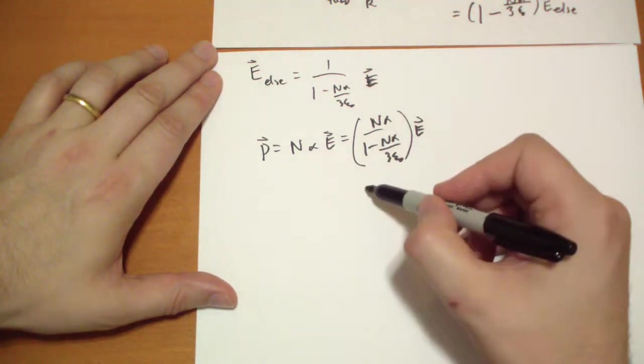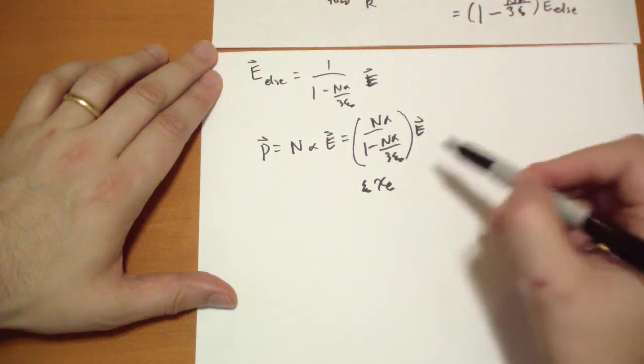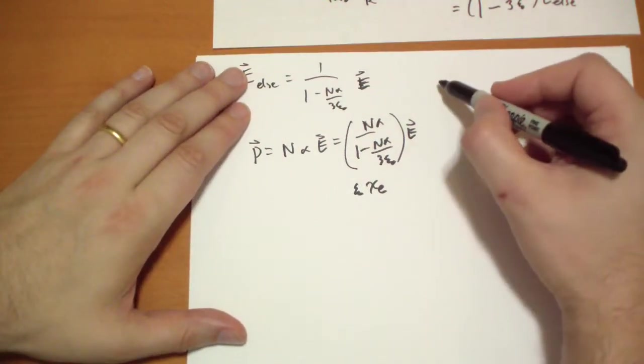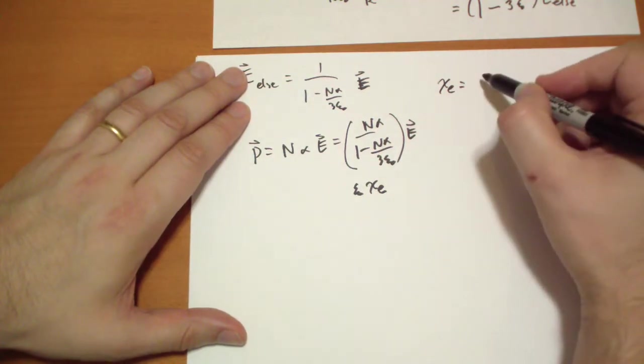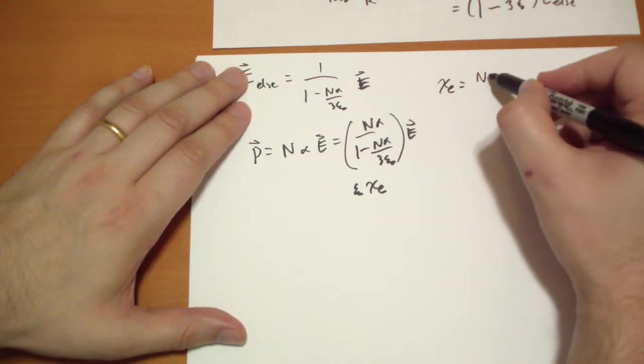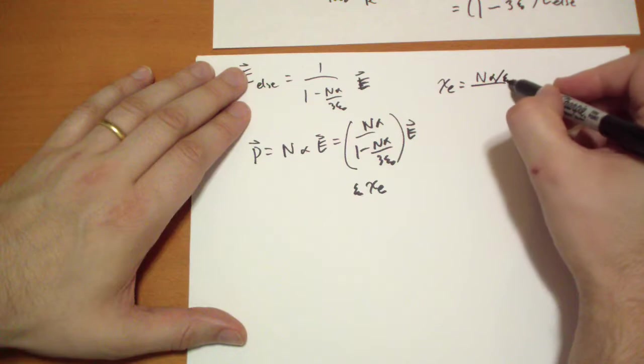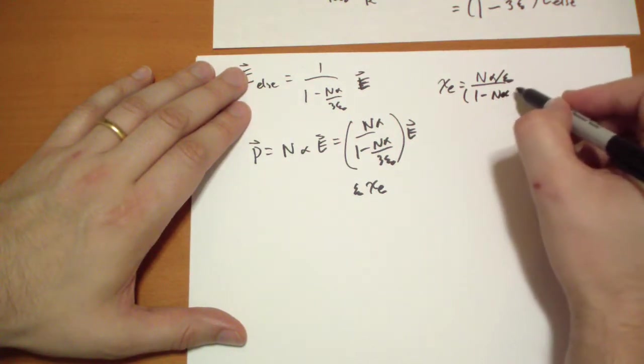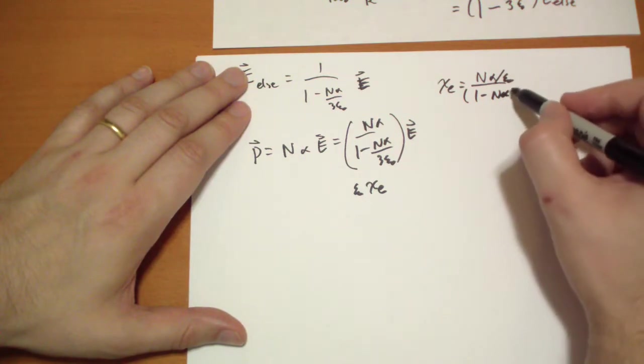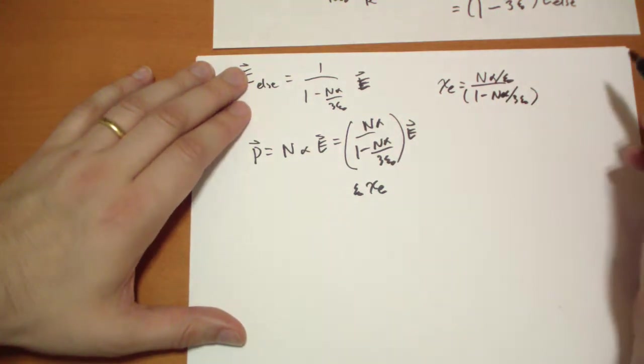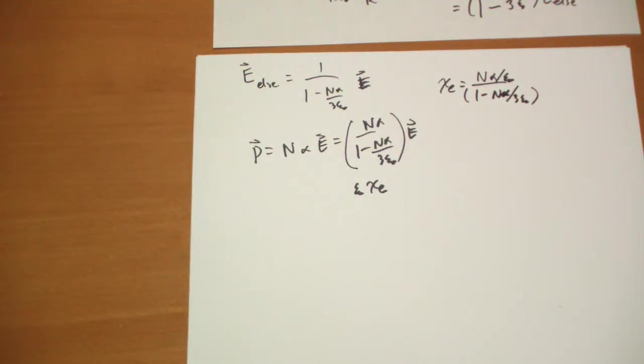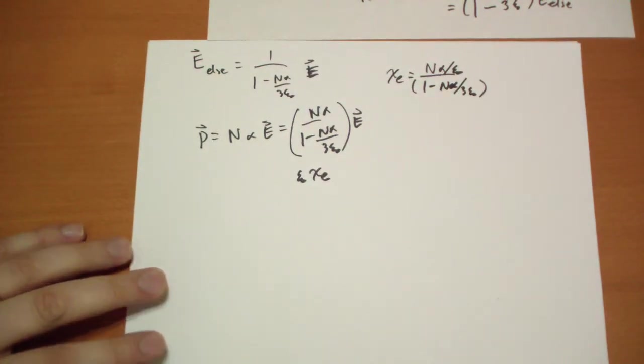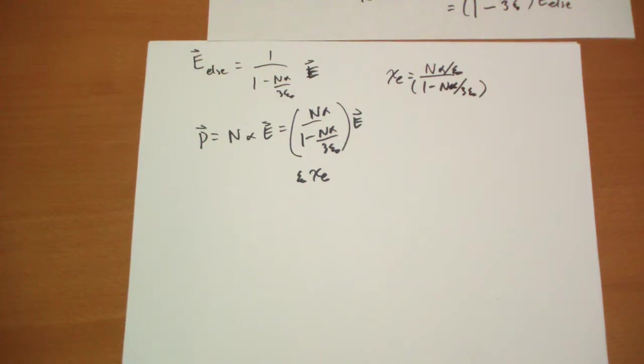And so this chunk is epsilon-naught chi-e of the material. So we get chi-e is equal to N alpha over epsilon-naught, times 1 minus N alpha over 3 epsilon-naught. This is a much more accurate description of the susceptibility given the atomic polarizability.